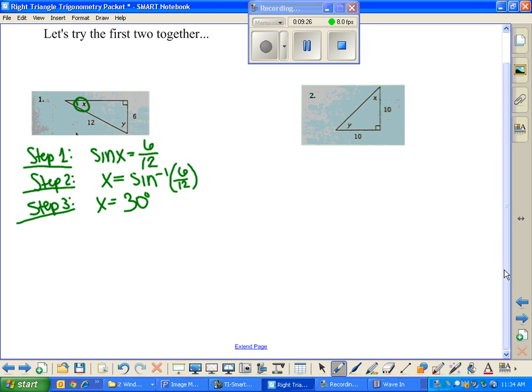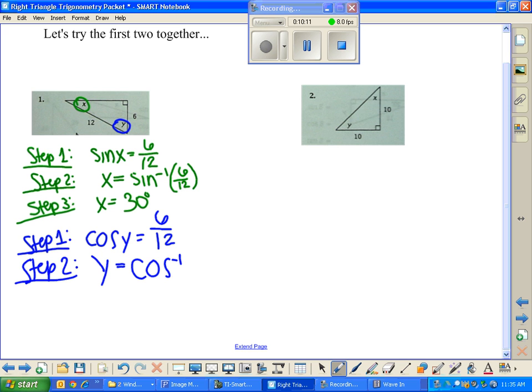Let's scroll down a bit, switch it up. Y, we are looking for Y now. Step 1, what trig ratio works now? It's in a different position, we have different values. Yes. The cosine, you are correct. Cosine of Y equals, we have the adjacent now, now that we're in a different position. Cosine of Y equals 6 over 12. Step 2, isolate our Y value. Anyone?